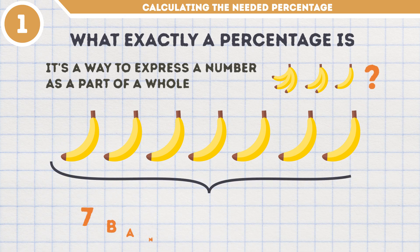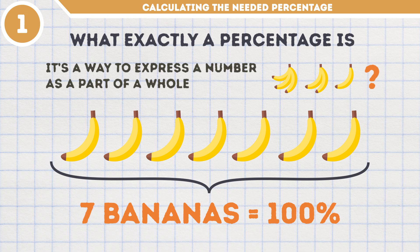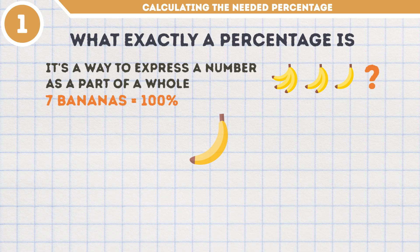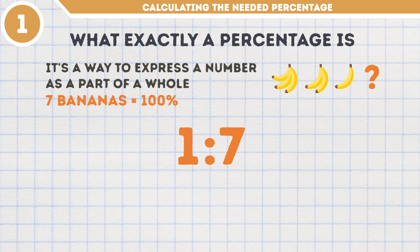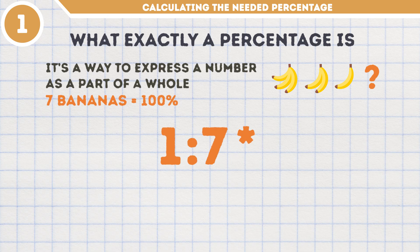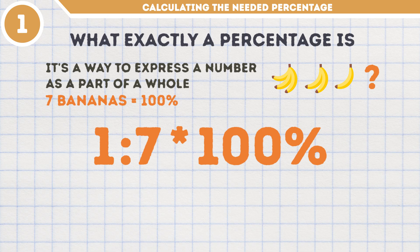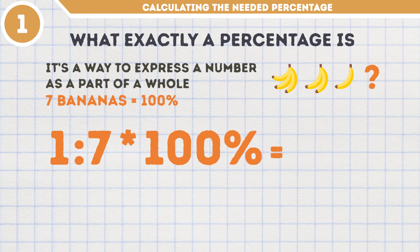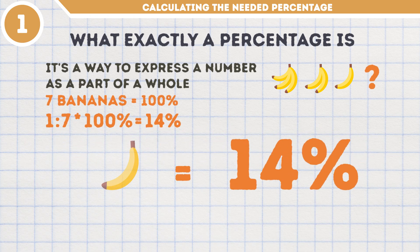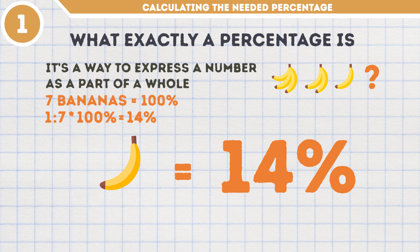You had 7 bananas, which makes 100% — that's your total inventory. And you ate 1 banana out of these 7. All you have to do is find out what percent of the total this 1 banana makes. To do that, you divide the number of bananas you ate, 1, by the number of bananas that make 100%, which is 7. Since we're after the percent, you'll need to multiply the result by 100% as well. So it's 1 divided by 7, then times 100 — you'll get about 14%. You consumed 14% of your bananas when you ate 1 of the 7.